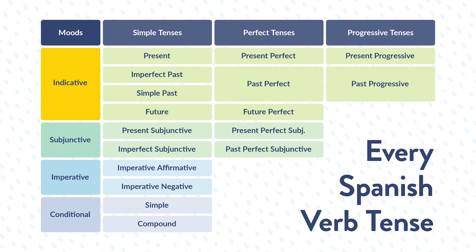Depending on what you're trying to express, you'll use one of these four moods for your verb, and each mood actually has its very own tenses. Within the indicative mood, you're going to have simple tenses, perfect tenses, and progressive tenses. Within the category of simple indicative tenses, we're going to see present, imperfect past, simple past, and future tense. When it comes to indicative perfect tenses, there's a present perfect, a past perfect, and a future perfect tense. Finally, for the progressive indicative tenses, there are only two subcategories: present and past.